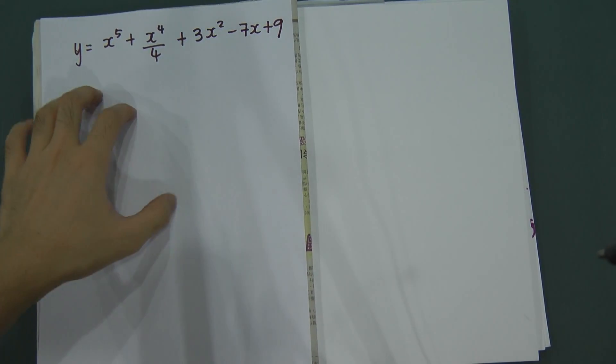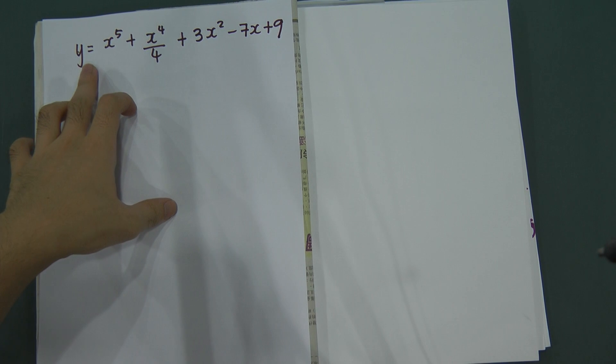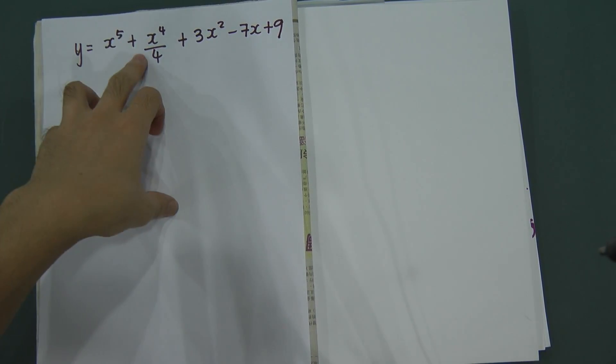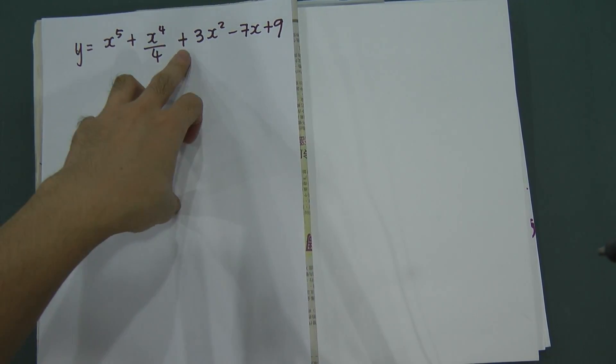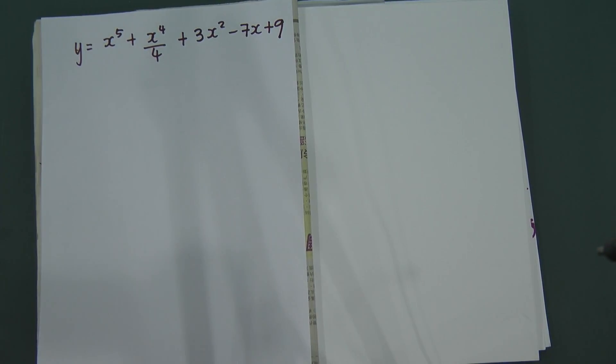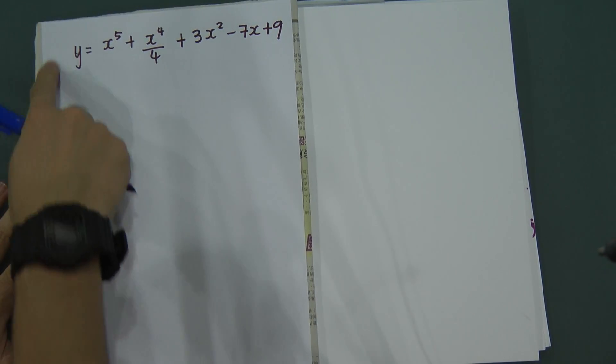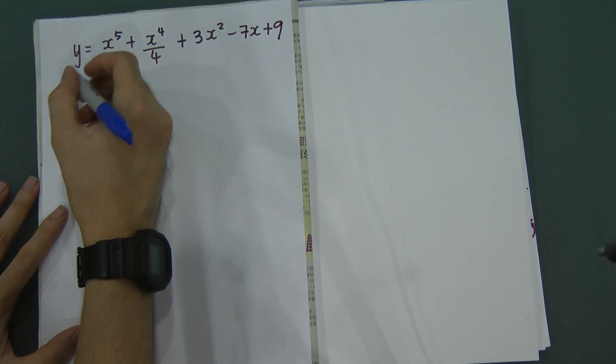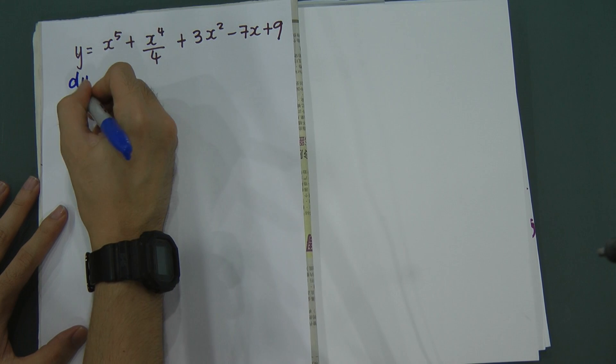First you will see an equation here. It says y equal to x power of 5 plus x power of 4 divided by 4 plus 3x power of 2 minus 7x plus 9. So when you want to differentiate this one, when you here got y and here got x, they call it dy dx.